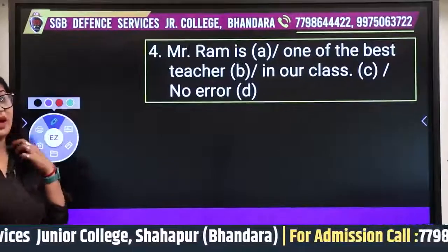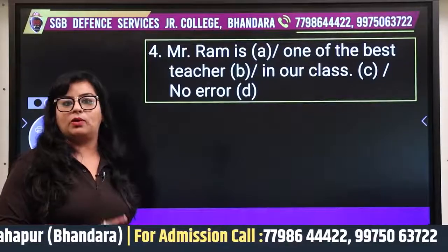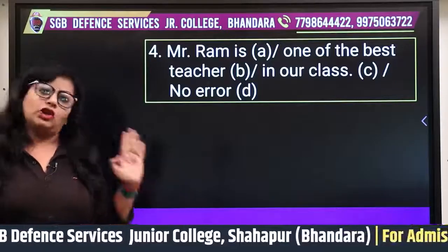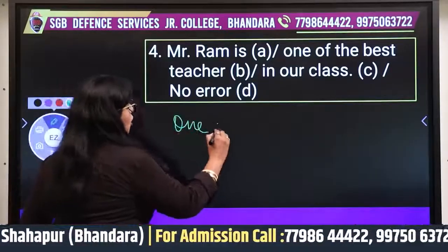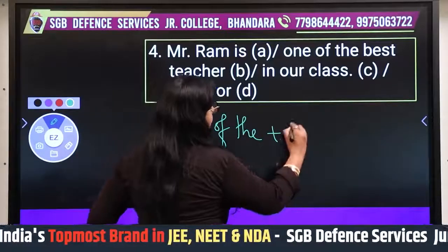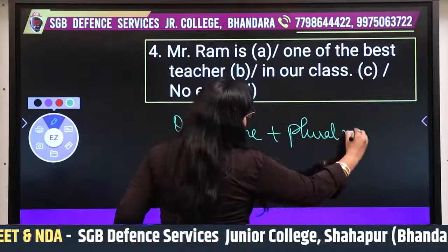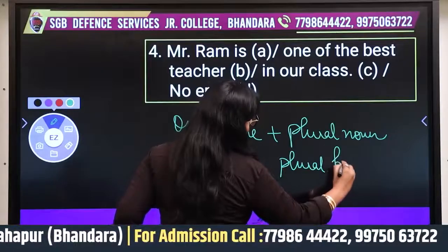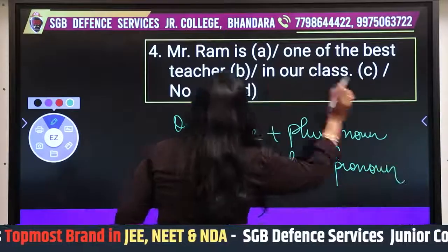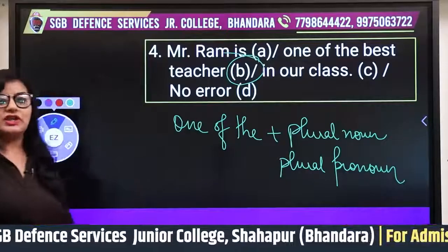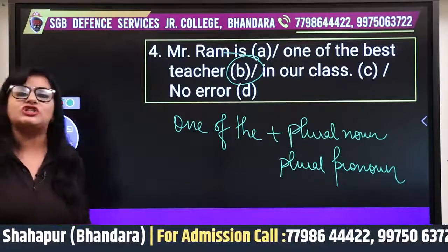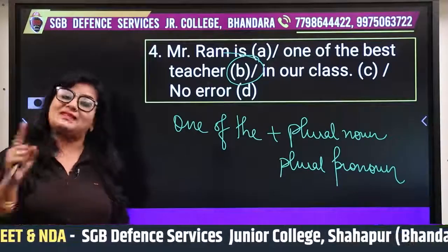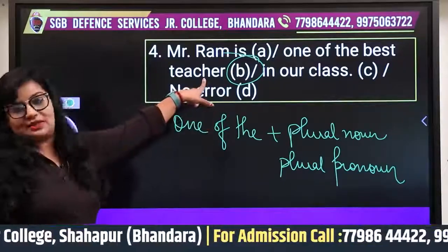Question number four: 'Mr. Ram is one of the best teacher.' I just taught this rule — whenever 'one of the' is used, after it plural noun or plural pronoun is used. So the mistake is clear: it should be 'Mr. Ram is one of the best teachers in our class.' Ram is one among the many good teachers, so 'teachers' — plural — is correct.